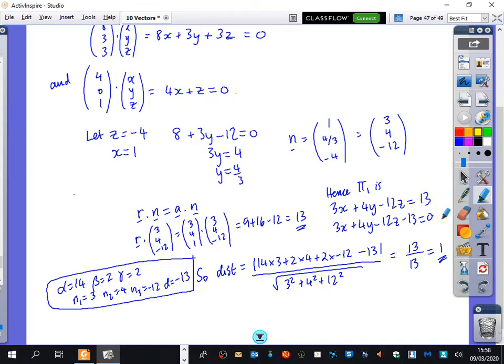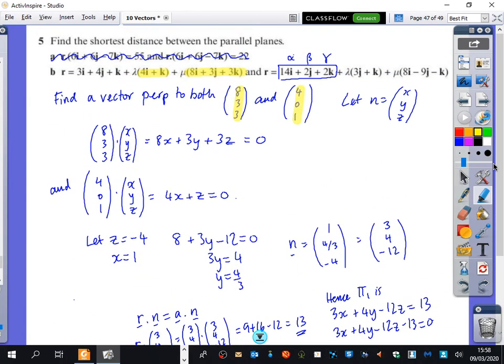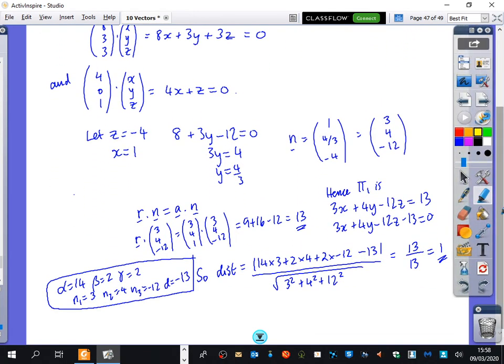Which rearranges to this. And then because there's so many numbers on my page, I wrote that the coordinate that I was trying to find the shortest distance was, which is this one here: alpha, beta, gamma, which is 14, 2, and 2. That's my point.